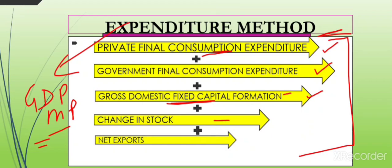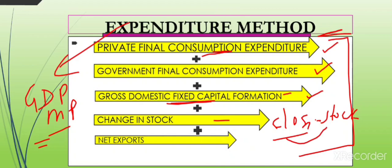The fourth component is Change in Stock, which is inventory investment. Change in stock equals closing stock minus opening stock — that is, the difference between stock at the end of the year and stock at the beginning of the year. The fifth and last component added to GDPMP is Net Export, which equals exports minus imports. Money received from exports is added, while the value of imports is subtracted.